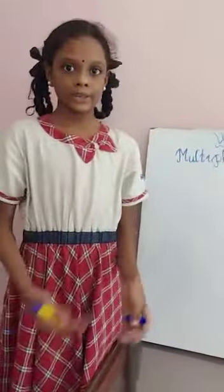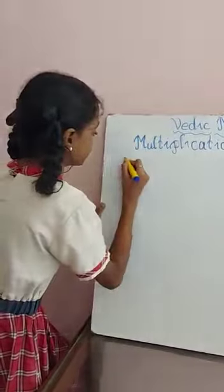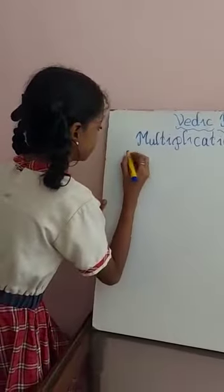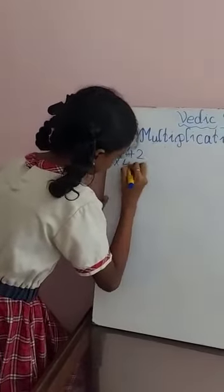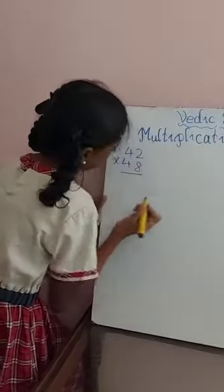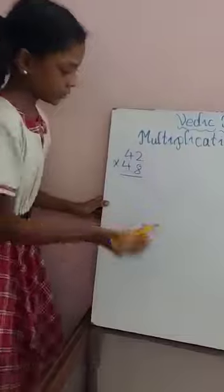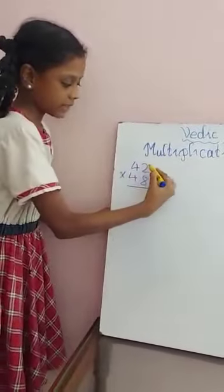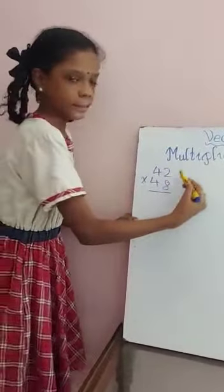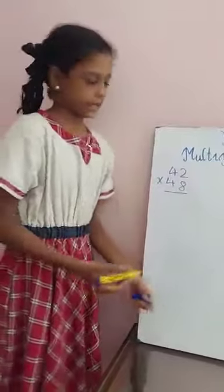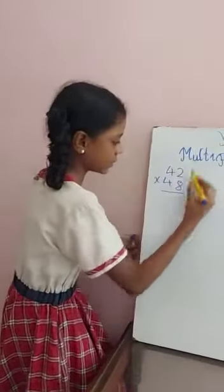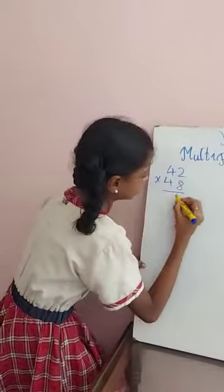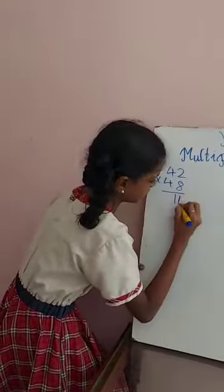So now I am going to tell how I did these problems. 42 into 48. So first we need to check the ones place. If the sum of these digits in the ones place make up 10, we can easily multiply them. So 2 plus 8 is equal to 10. So we have no problem. 2 into 8 is equal to 16.